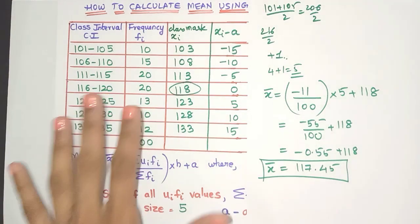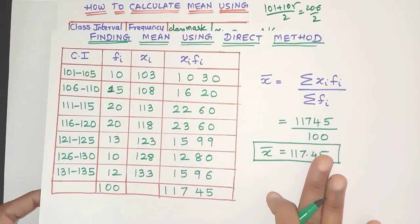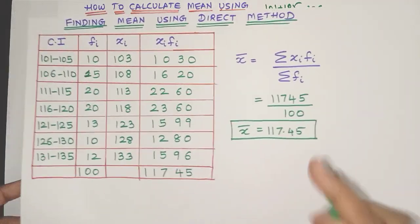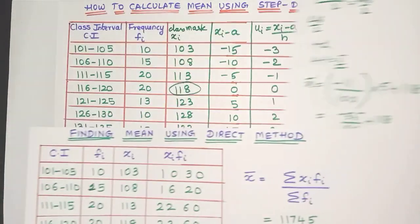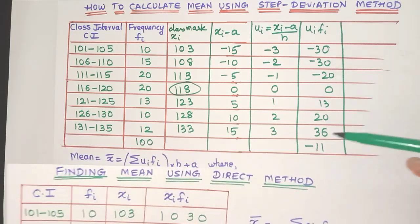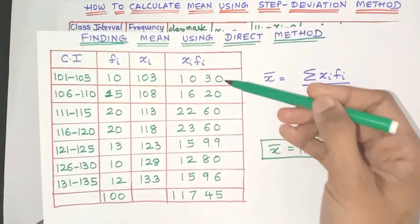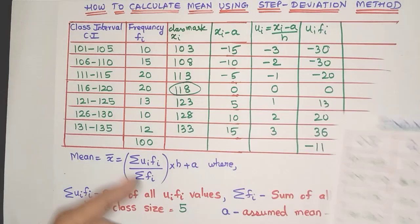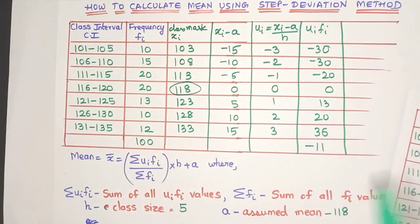Now I've already calculated the mean of the grouped data using direct method. Now answers will always be the same, whatever method you use. But just have a look at the numbers, friends. Here ui fi values are very simple, but here the xi fi values are very huge. And that's why we have chosen the step deviation for this data.